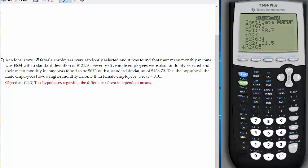Since he wants us to test that the male have higher income than female, I'm going to call the male and label it one. So this is male, and I'm going to take the information. So n1 is 75, x1 bar is the mean which is $676.